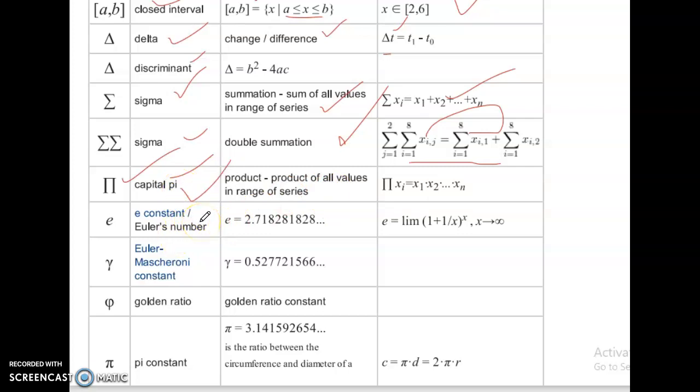E. Constant, Euler's number. E equal to 2.718. E equal to limit of 1 plus 1 by x power x, x tends to infinity.